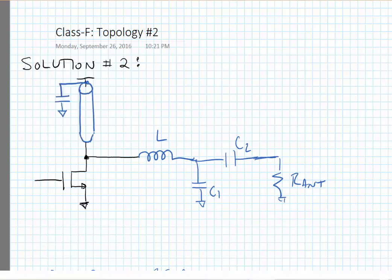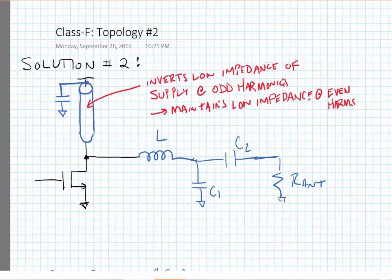Now this solution is going to take the short circuit from the supply voltage and invert the impedance using a quarter wave transmission line, much like the last solution did. So here at odd harmonics we maintain the high impedance, and at even harmonics we maintain a low impedance, which is what we want for the Class F network.